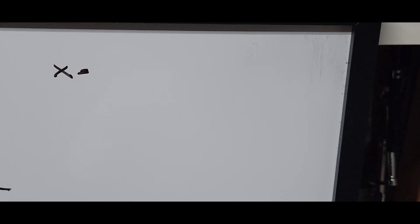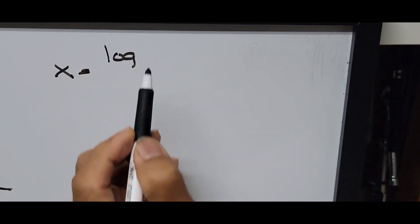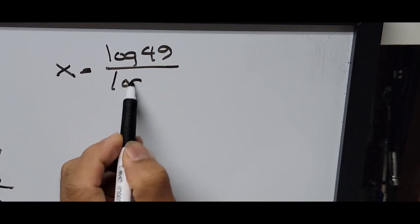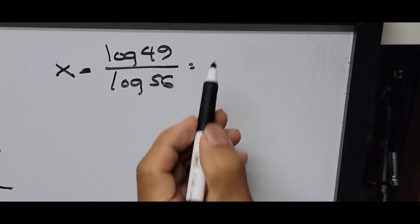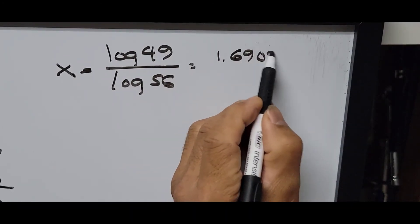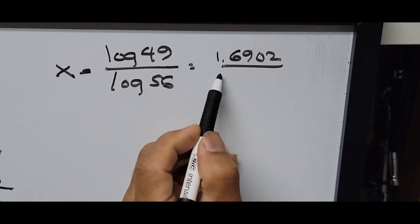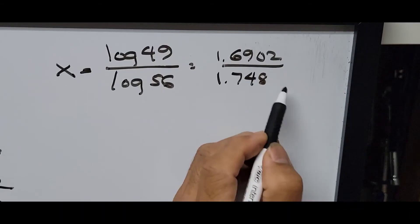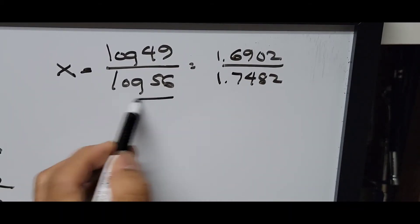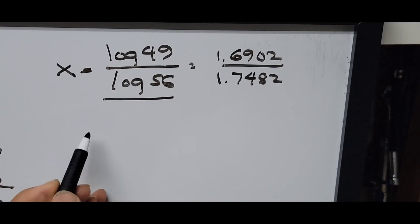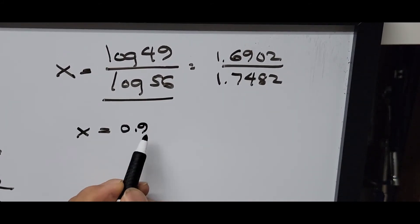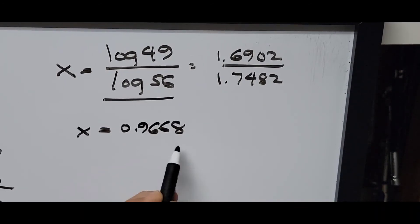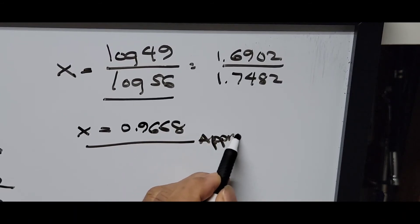Computing the decimal: log(49) is approximately 1.6902 and log(56) is approximately 1.7482. Dividing 1.6902 by 1.7482, x is approximately equal to 0.9668. That is the approximate decimal value of x.